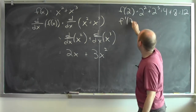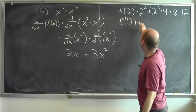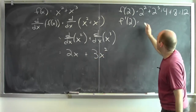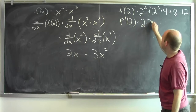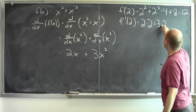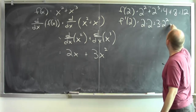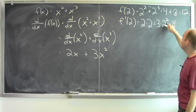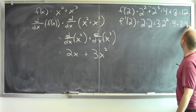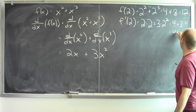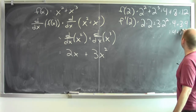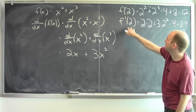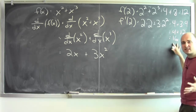What's the derivative at 2? The derivative of this function is 2x plus 3x squared, so I plug in 2 for x. I get 2 times 2 plus 3 times 2 squared. 2 times 2 is 4. 3 times 2 squared: 2 squared is 4, so this is 3 times 4. That's 4 plus 12, which is 16. So the derivative of this function at 2 is 16.